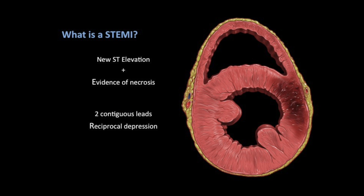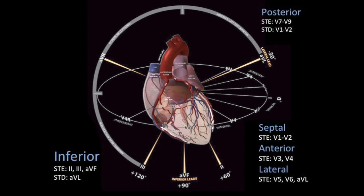So first off, what is a STEMI? By definition it's new ST elevation using two or more contiguous leads on the EKG, also with evidence of necrosis. In the hospital we use things like cardiac biomarkers or maybe echo to determine this. Out in the field it's mainly going to be new or presumed new ST elevation with concerning symptoms — most likely chest pain but also shortness of breath, diaphoresis, nausea, things like that. The geography of a STEMI helps us localize and diagnose where the lesion might be, and knowing the focal findings can help differentiate a STEMI versus a STEMI mimic.